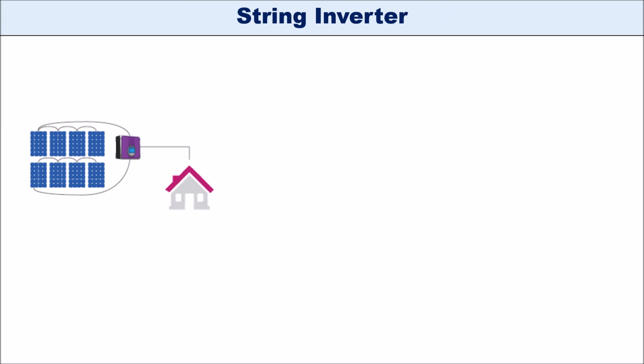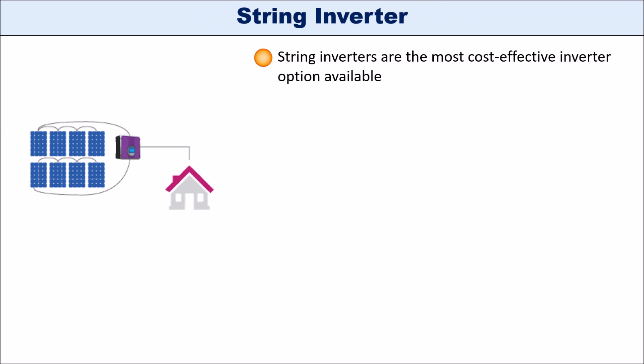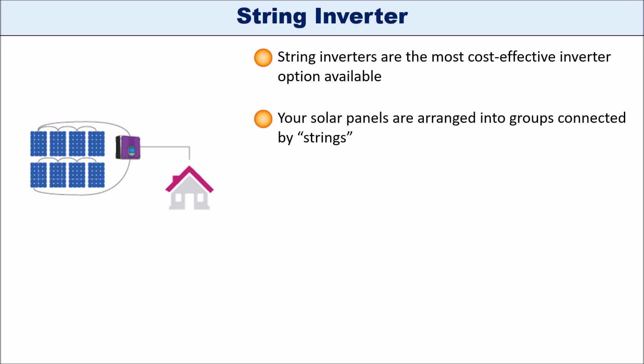String inverters are the most cost-effective inverter technology available right now. Solar installation companies would generally offer your system with a string inverter if your roof is not shaded at any point in the day and if it does not face multiple directions. If you look at the figure, you can see how the panels are connected together — these are called strings, where panels are arranged into groups.